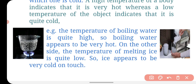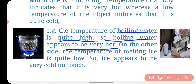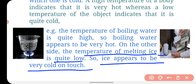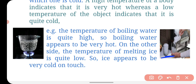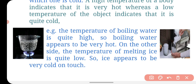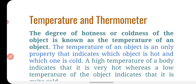For example, the temperature of melting ice is low, so it appears cold on touch. If the temperature is high, it indicates the object is hot. If the temperature is low, it indicates the object is cold. So temperature — the degree of hotness and coldness — tells us how warm or cold something is.